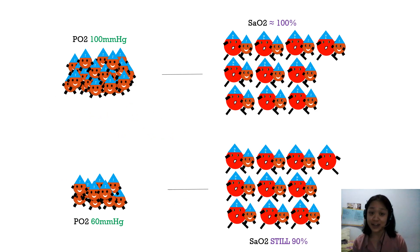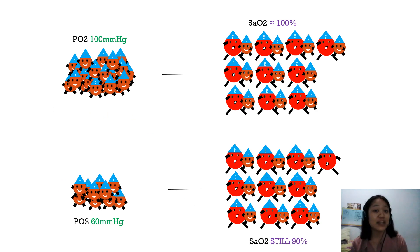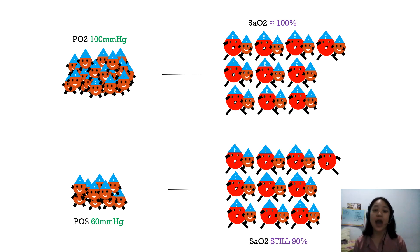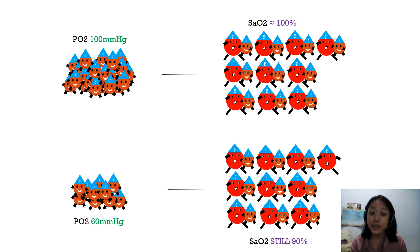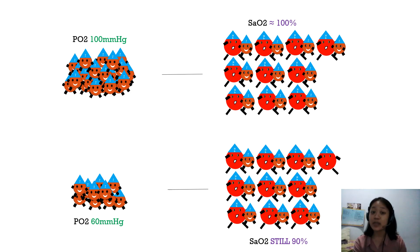If you say yes, you might perhaps be thinking that the oxygenation of blood in the lungs would be inadequate if the affinity of hemoglobin for oxygen is lower. However, at the normal partial pressure of oxygen, or PO2, in arterial blood of about 100 mmHg, the hemoglobin oxygen saturation is close to 100%. And even if the PO2 is reduced to 60 mmHg, the hemoglobin oxygen saturation is still 90%.